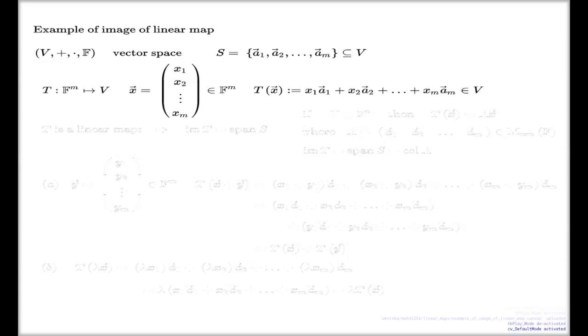That is the element of V, no question about that. And I insist that this is a linear map. Look at the definition of my linear map. It takes m tuples and returns elements of my abstract vector space V. It takes the m tuple of coefficients and returns the linear combination of the vectors from the fixed set with the given coefficients from x.